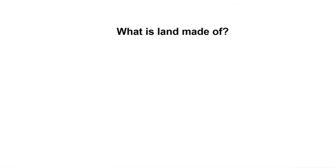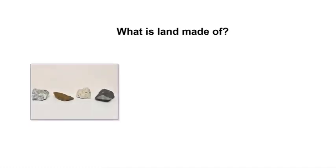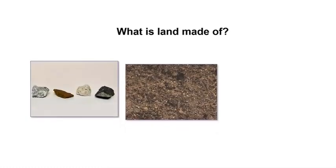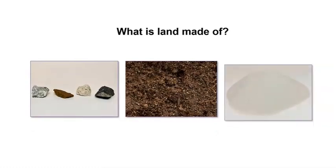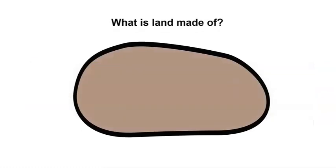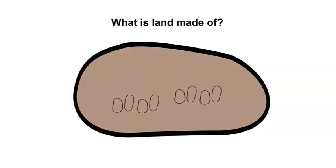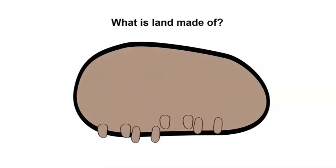So how would you answer the question, what is land made of? Well, land can be made of lots of different materials, such as rocks, soil, and sand. The rocks that make up land can change by breaking into smaller components of land.